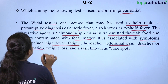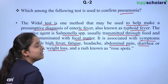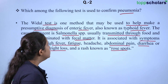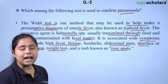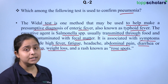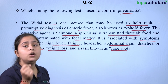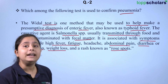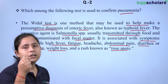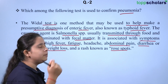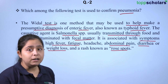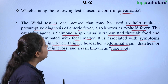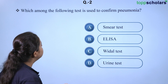The patient might also have constipation, weight loss, and a rash which is known as rose spots. The Widal test involves the preparation of antibodies, and the causative agent Salmonella may be present in the patient's serum as antigens. When the serum is mixed with these antibodies, if there is agglutination, that means the antigen and antibodies have reacted, giving a positive result.